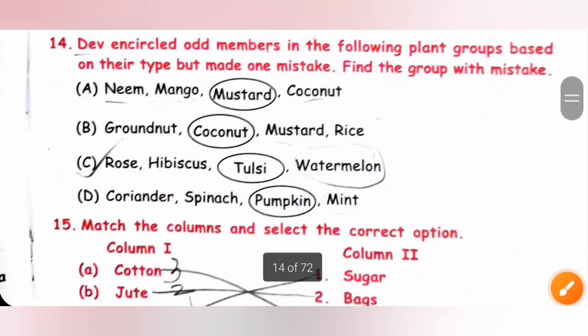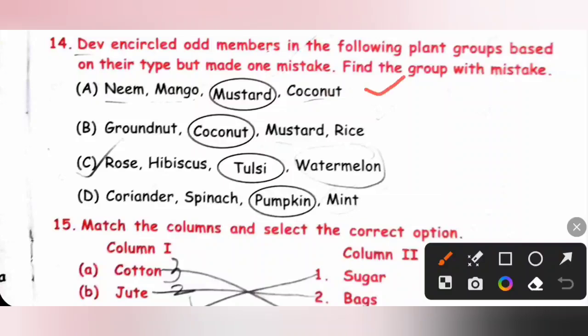Fourteenth, they have encircled odd members in the following plant groups based on their type but made one mistake. Find the group with mistake. Option A: neem, mango, mustard, coconut. Here neem, mango and coconut are trees, mustard is a herb, so it is correctly circled. B: groundnut, coconut, mustard and rice. Here also coconut is a tree while the others are herbs, so correctly encircled. C: rose, hibiscus, tulsi, watermelon. Rose, hibiscus and tulsi are shrubs while watermelon is a creeper. So here the odd member is wrongly encircled. D: coriander, spinach, pumpkin, mint. Here also odd member is correctly encircled. So option C is the correct answer.